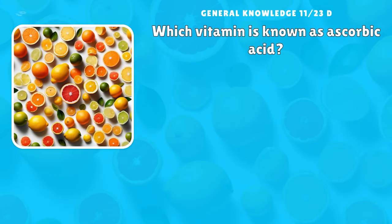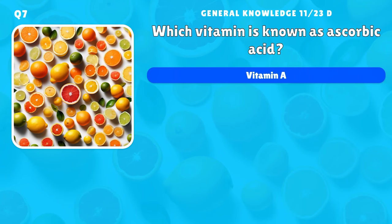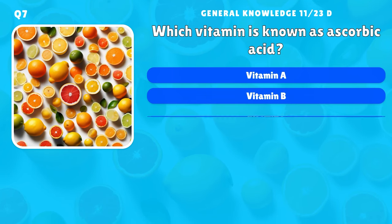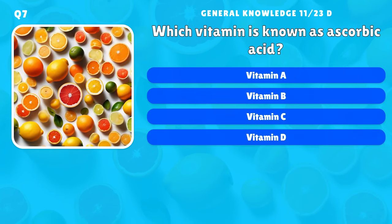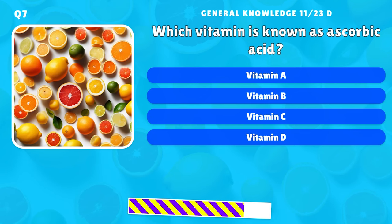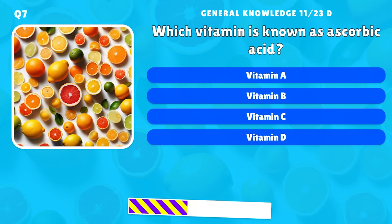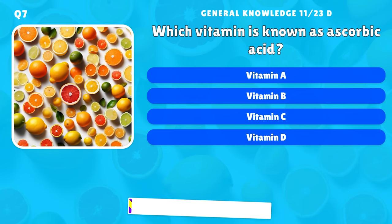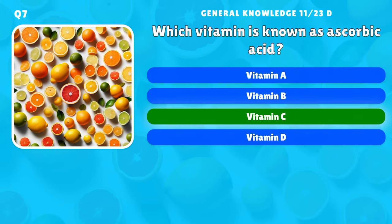Which vitamin is known as ascorbic acid? A) Vitamin A, B) Vitamin B, C) Vitamin C, D) Vitamin D.